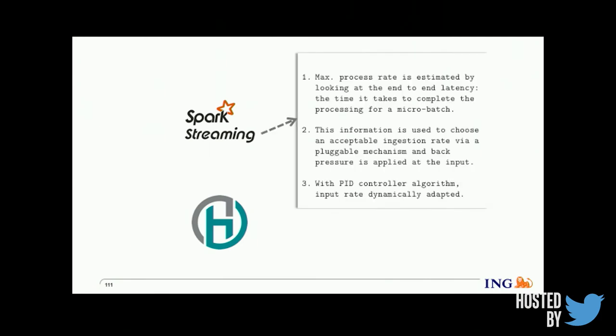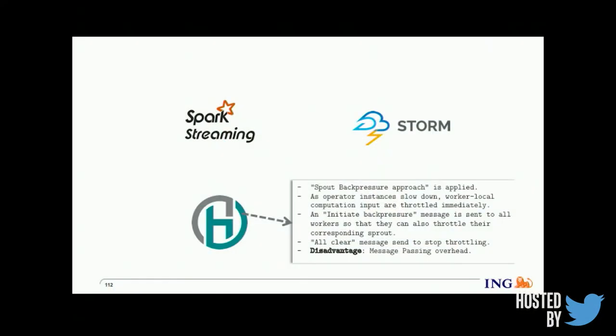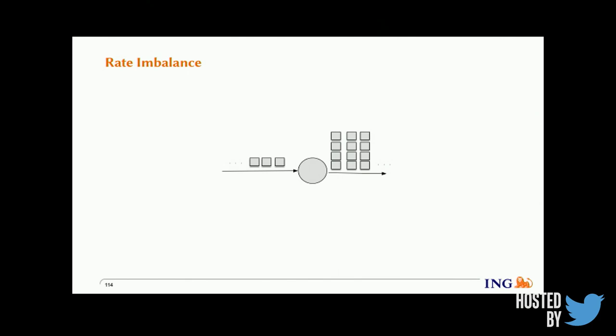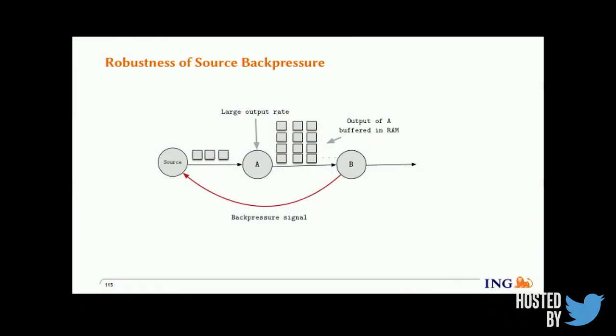In Spark Streaming, since it uses micro-batching, it can determine the ingestion rate and derive how much data to send downstream. In Heron, the spout back pressure mechanism sends an initiate back-pressure signal upstream when there's a problem with an underlying node, and broadcasts it to other spouts so they can slow down. When the situation is resolved, an all-clear signal is sent. Storm uses the same approach as Heron. One problem is load imbalance — a single operator can receive a lot of input and produce a lot of output (as in join operations), and sending back pressure to the source in that case doesn't solve the actual problem and may result in resource exhaustion.